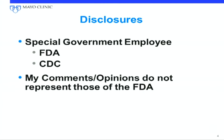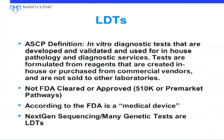What is a laboratory-developed test? The American Society for Clinical Pathology definition: diagnostic tests developed, validated, and used in-house for diagnostic services. These are not FDA-cleared or approved, and according to the FDA they are medical devices. CLIA does not approve tests — they oversee the environment where testing is done. We don't send a test to CLIA for approval. You can go on the web and pay a few hundred dollars and get a CLIA number and be in business for a period of time until you get caught.